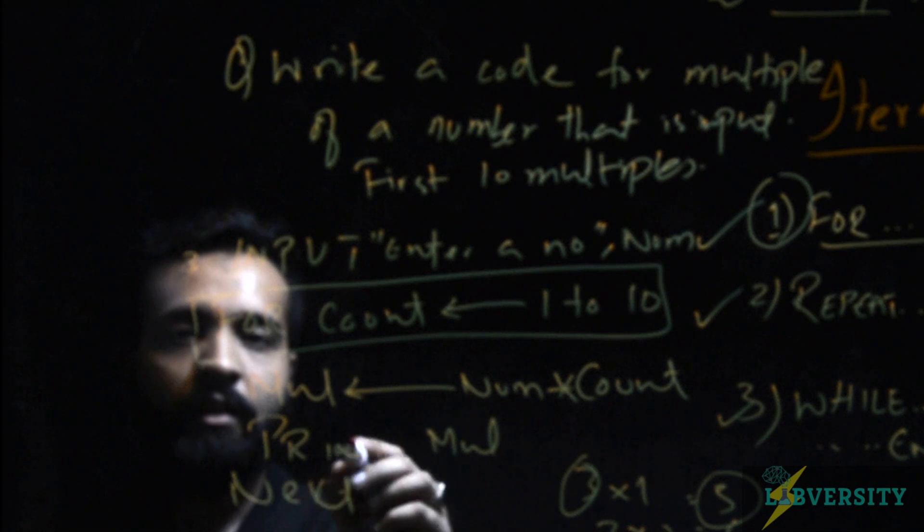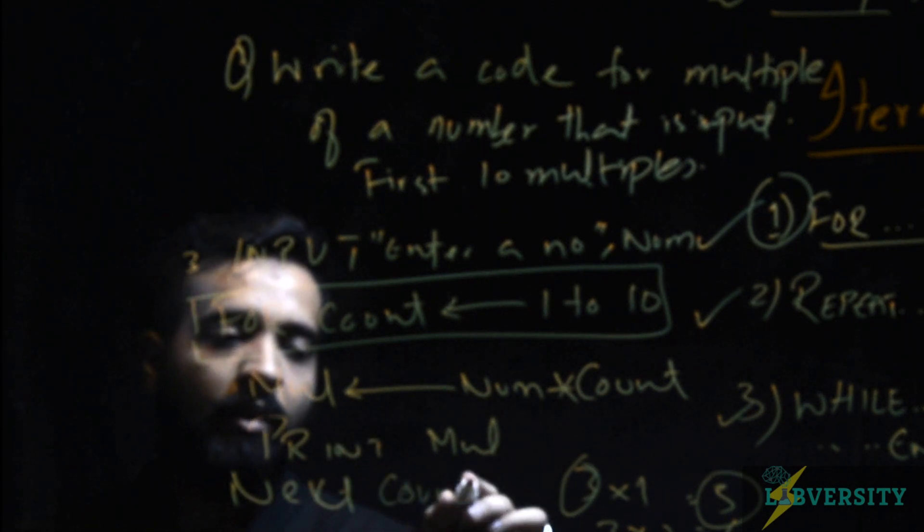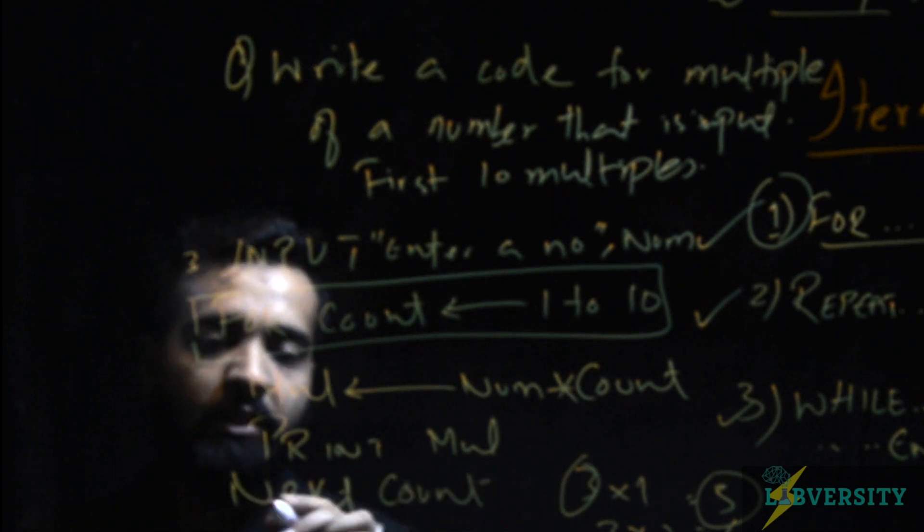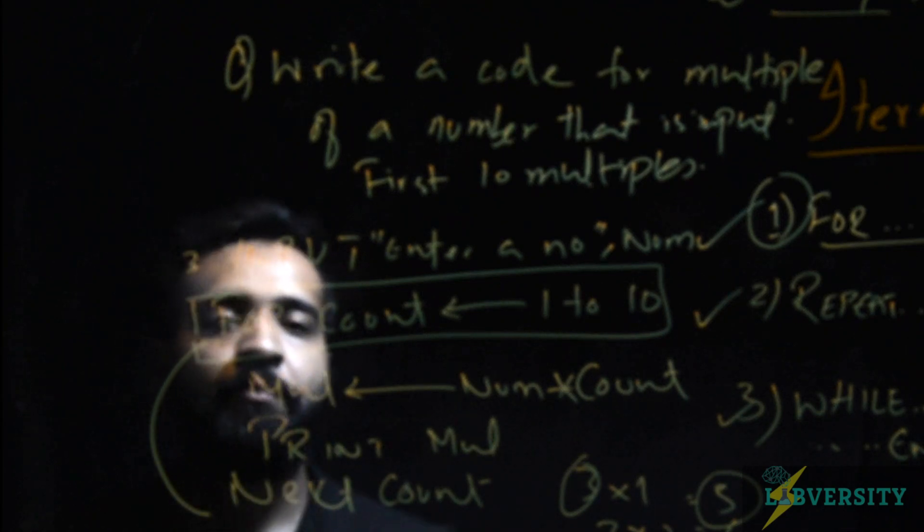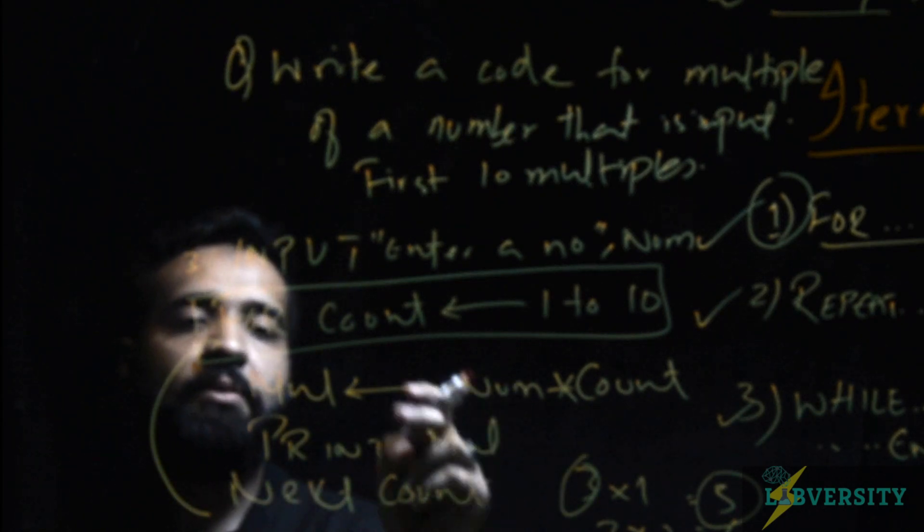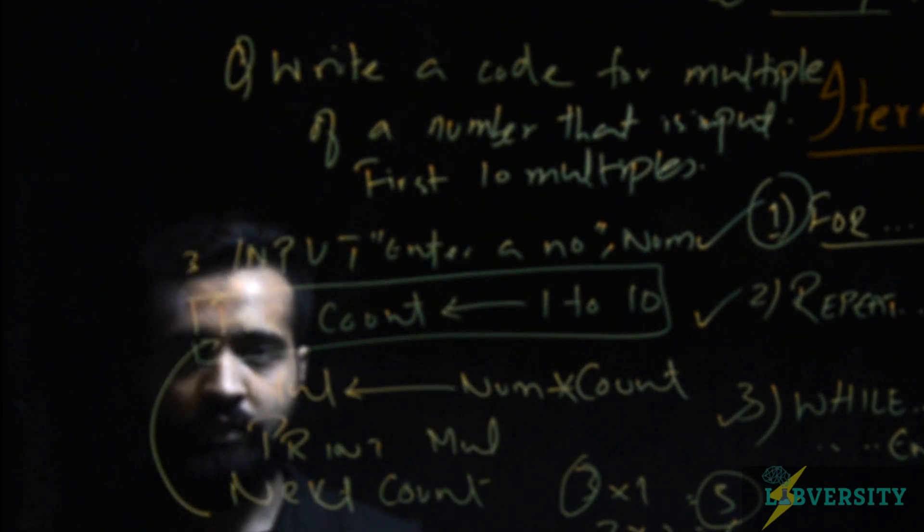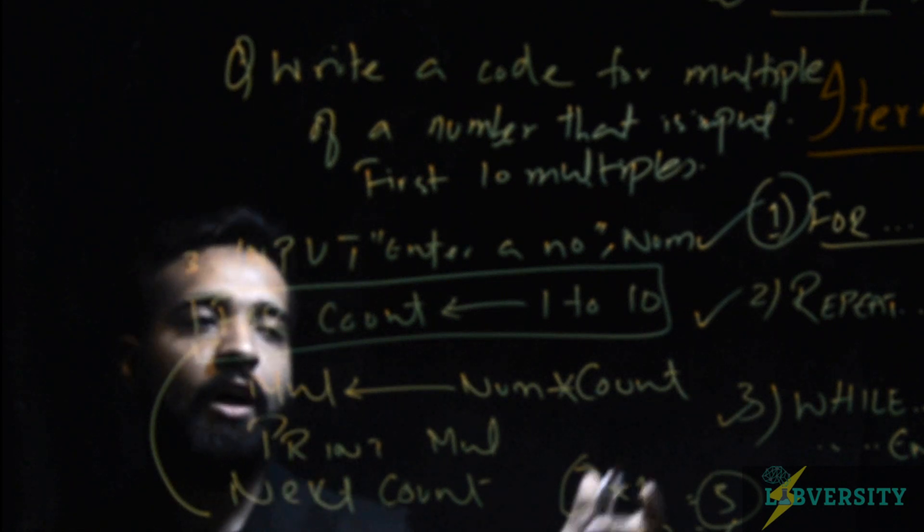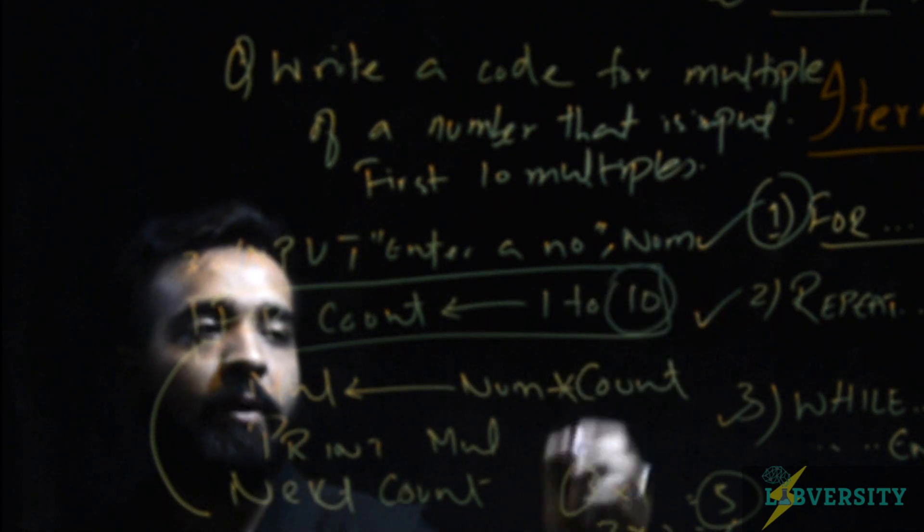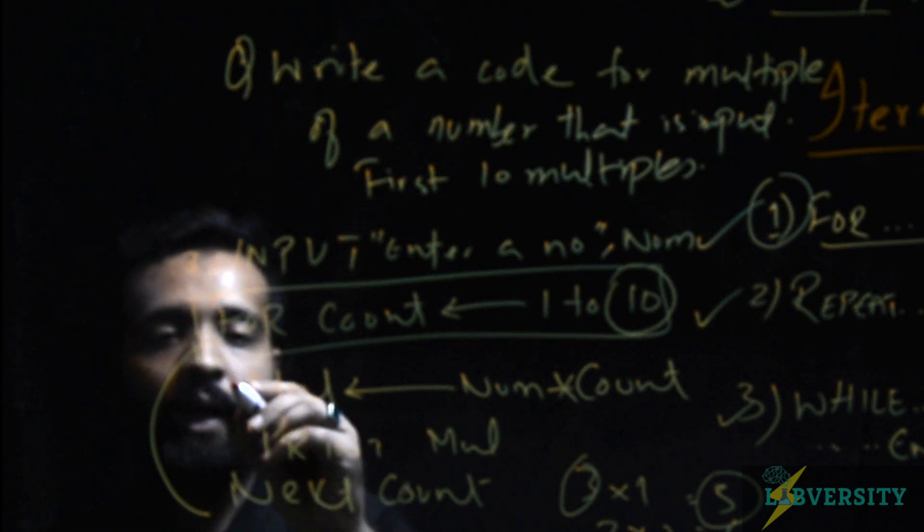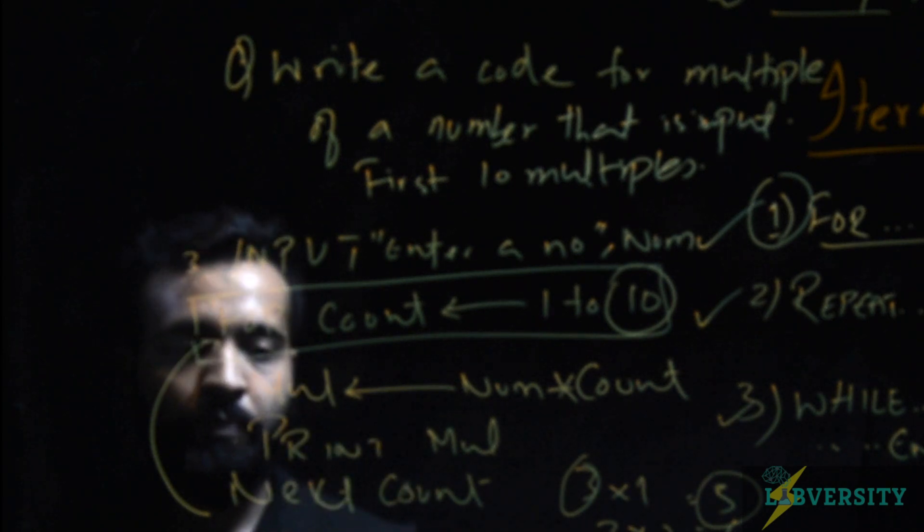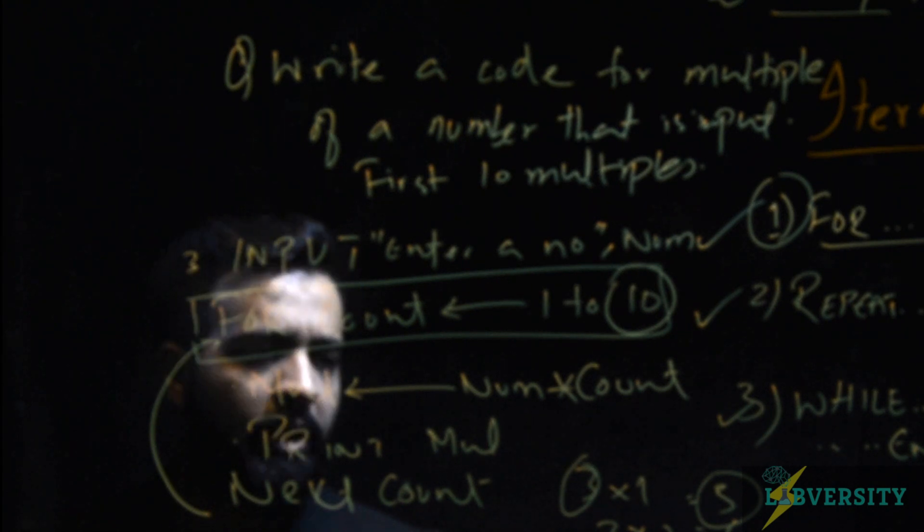What will happen is that next count means this line will come back to this line and then it will execute these two statements again. Whatever is written inside a loop will be executed until the range of repetitions (that is 10) ends. So these two lines will run 10 times. Our code is complete.